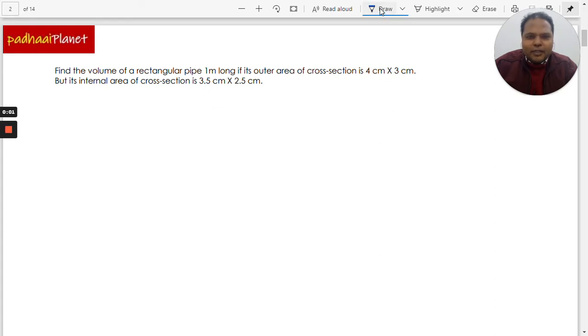Hi, welcome to Padhai Planet. In this question we have a rectangular pipe which is one meter long and the outer area of cross section of the pipe is 4 cm by 3 cm, while the internal one is 3.5 cm and 2.5 cm.